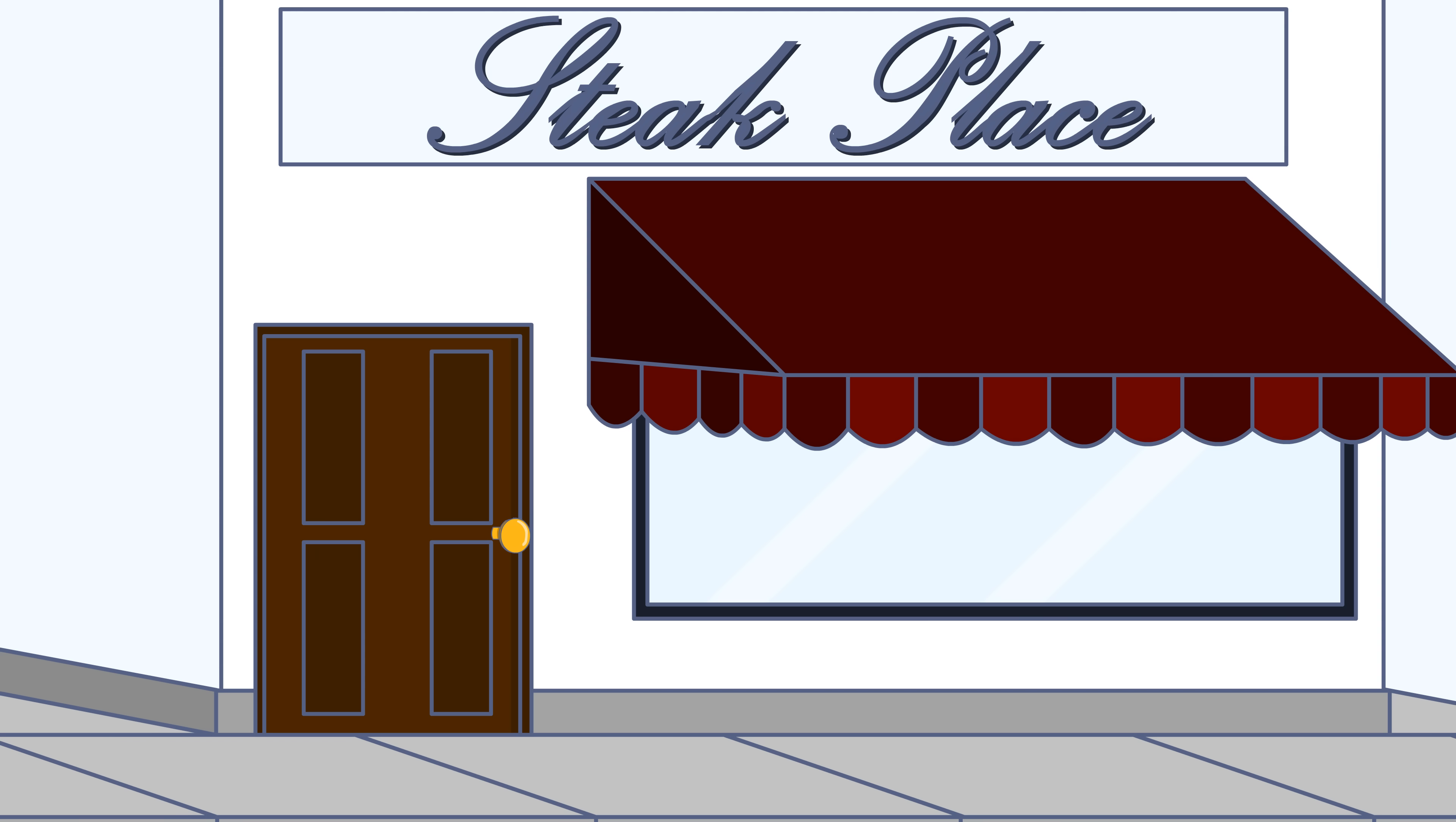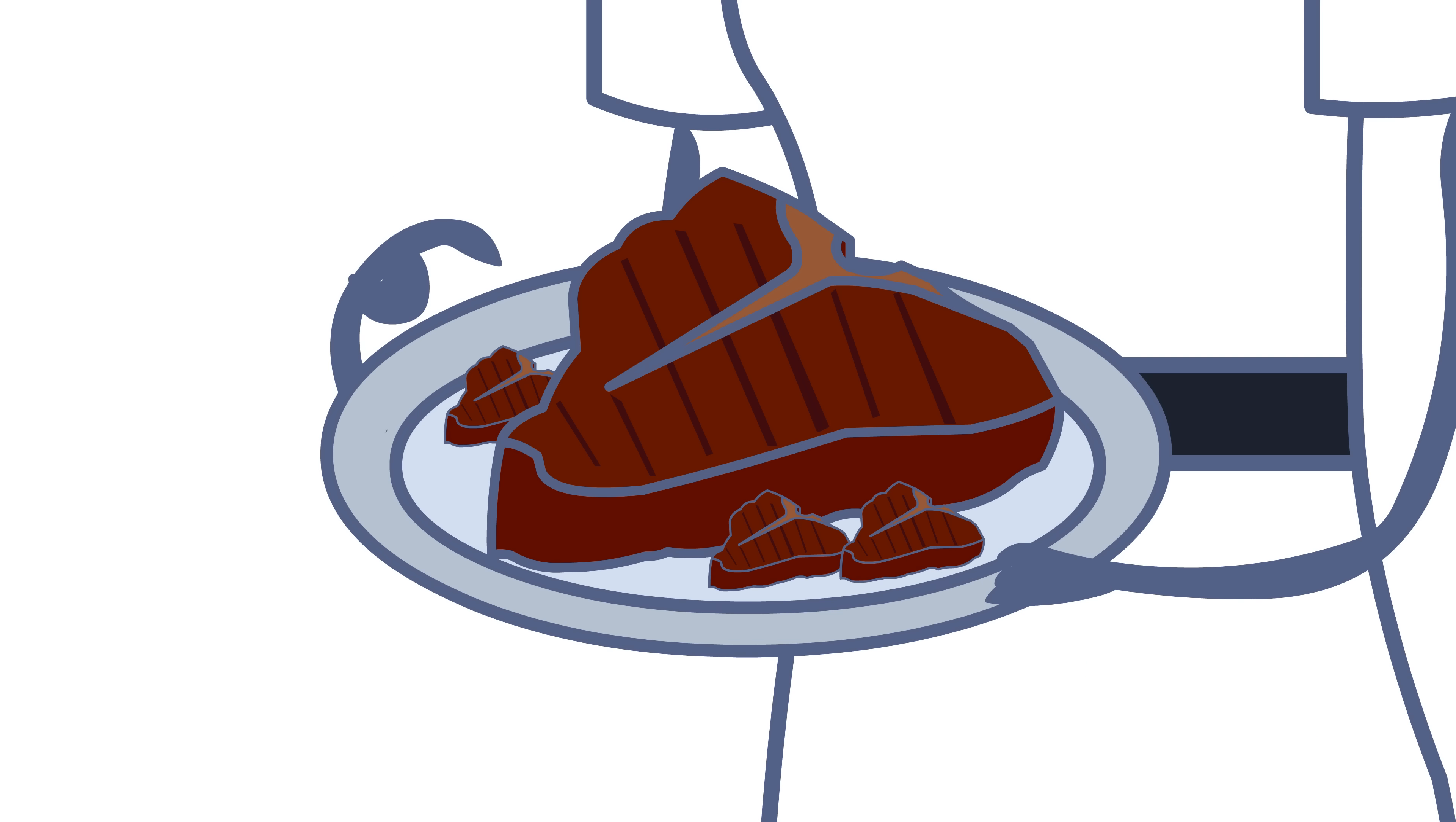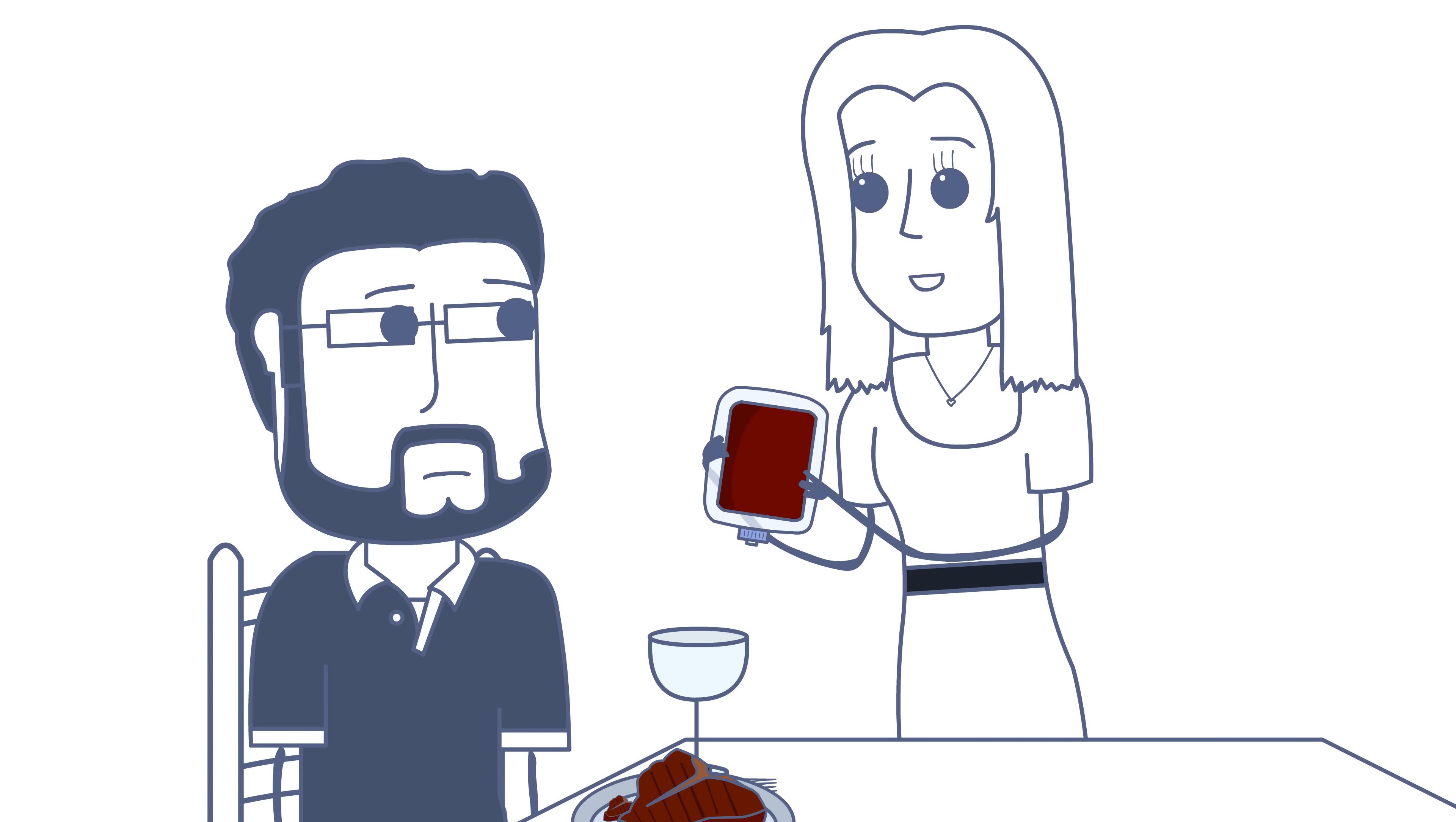It's just like a steak place. It's like, 'I'd like a steak.' 'We don't have potatoes. We just have steak and smaller steaks on the side.' 'I have a glass of wine.' 'We have blood.'